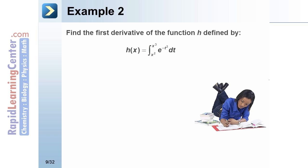Example 2. Find the first derivative of the function h defined by h of x equals the integral from x squared to x cubed of e to the negative t squared.